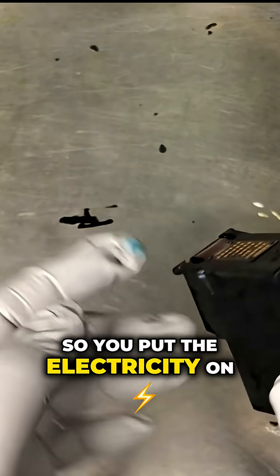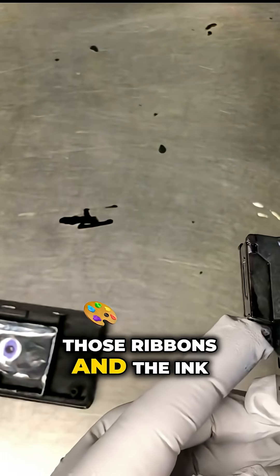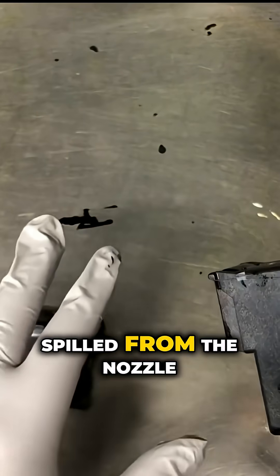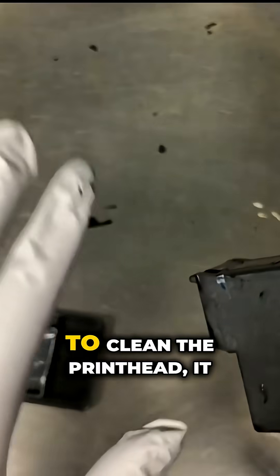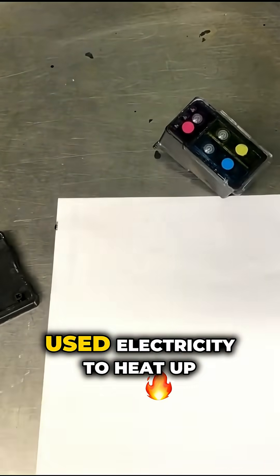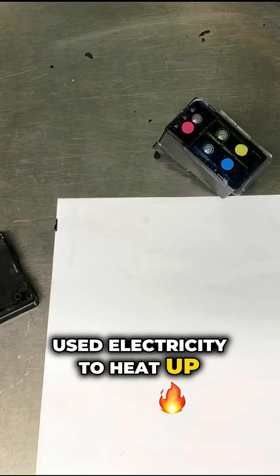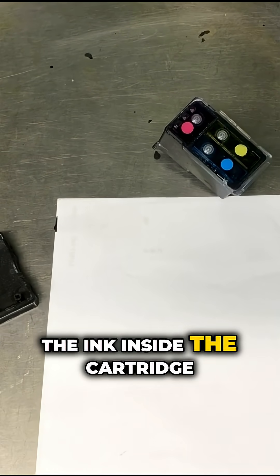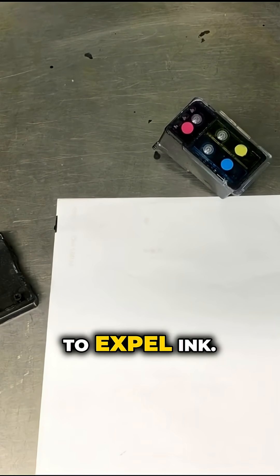So you put the electricity on those ribbons and the ink spills from the nozzle underneath. To clean the printhead, it uses electricity to heat up the ink inside the cartridge to expel ink.